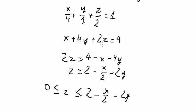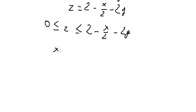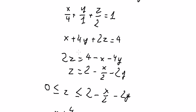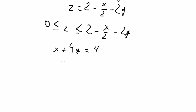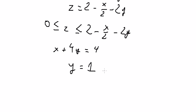Now for the boundary of dy. We set z equal to 0, so we get x plus 4y equals 4. We put x on the right and divide both sides by 4, giving us the boundary for y.